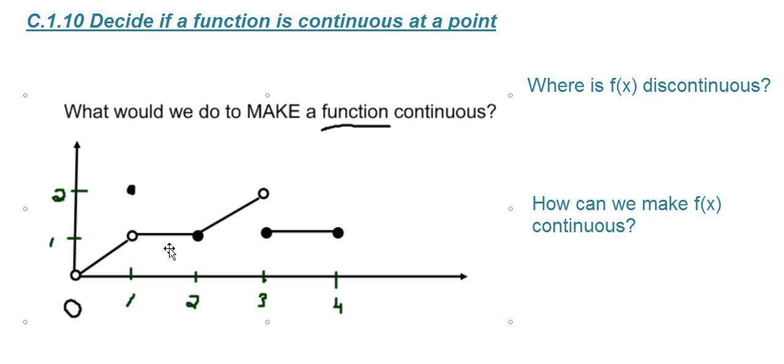Here we have this function right here, we'll call it f(x) as we normally do, and it's a piecewise function. We obviously see several points of discontinuity. In fact, that's the first question we're going to ask: Where is f(x) discontinuous? Well, looking from the graph, we can see it is discontinuous at 0, 1, and 3, but it is continuous everywhere else.